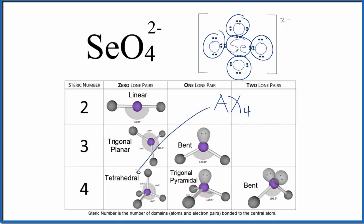Just like we found before. This is Dr. B with the molecular geometry for SeO4^2-, the selenate ion. Thanks for watching.